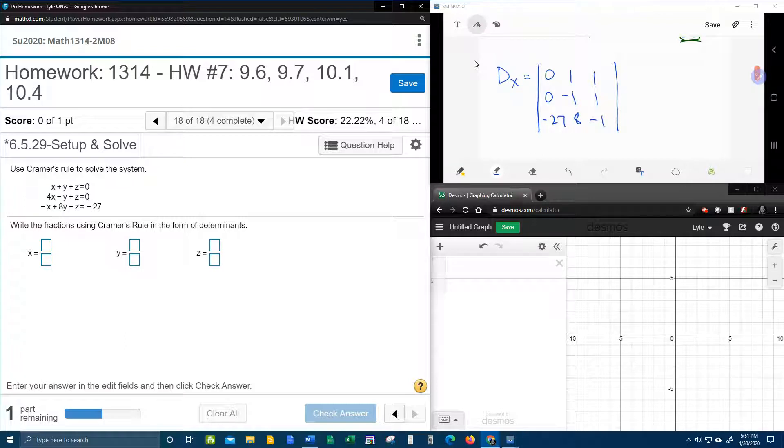And then we're going to crank out the determinant again. So copy and paste. 0, 0, negative 27. 1, negative 1, and 8. And then on the diagonal, multiplying. 0 times anything is 0. 1 times anything is itself. 0, and 0 times anything is 0. Add them up.